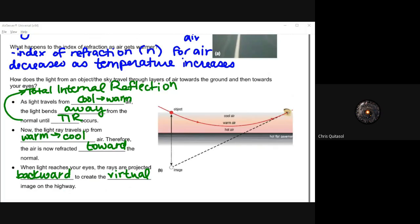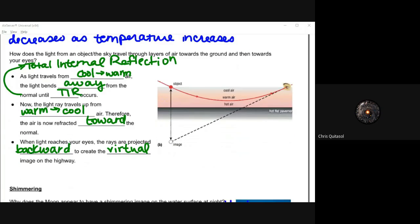As that light travels from the cool air to the warm air, it bends away from the normal until total internal reflection occurs. Now that light ray travels back up after that reflection into the cool air, and therefore the light is now refracted towards the normal. So that light reaches your eyes after being refracted twice as well as internally reflected once. This creates that virtual image on the highway.